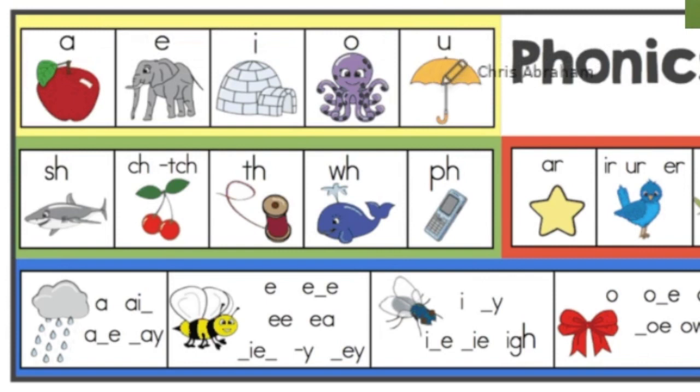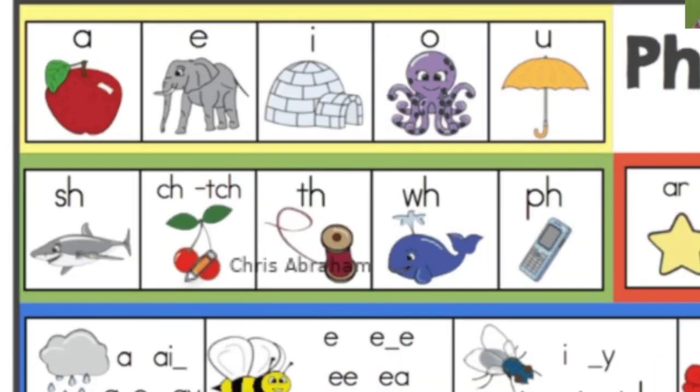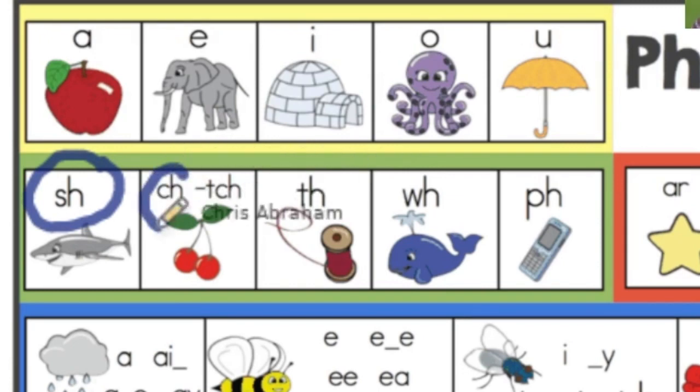Alright, this is basic phonics. Okay, now let's get a little harder. Now let's look at spelling patterns that are made up of two letters that form one sound, like SH in shark, or CH in cherry, or TH in thread.